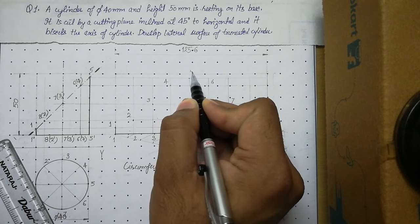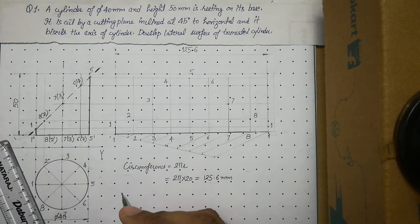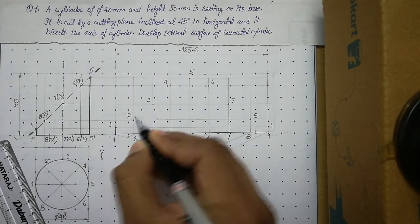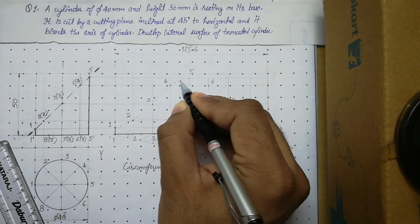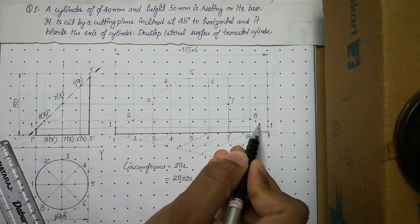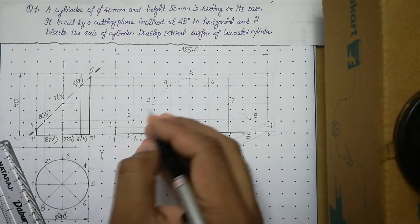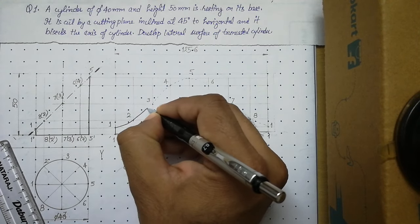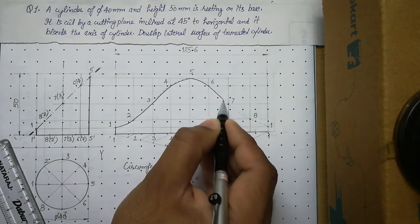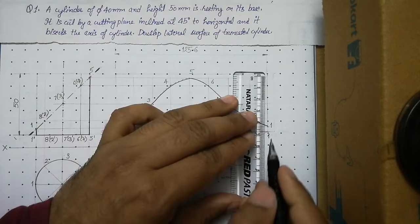Now join these points with a freehand curve, maintaining the slope. First join the points with a thin dash line to make a path, ensuring the curve is smooth and the slope is correct. Once you are sure, make the curve thick in a single stroke — do not shade, do not use a double stroke, just make it thick in one stroke. Make this part and the bottom part of the development thick.